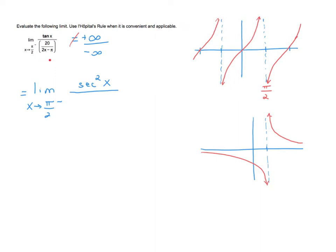Now for the derivative of the denominator: the denominator itself is a quotient — 20 over (2x minus pi) — so we could use the quotient rule. Instead, I'll rewrite it to make differentiation easier. The denominator is to the first power, so I can move it to the numerator by making the exponent negative one. I'm just rewriting it, not yet differentiating.